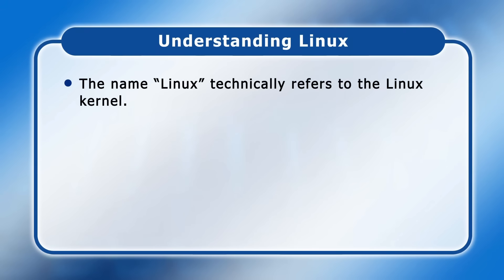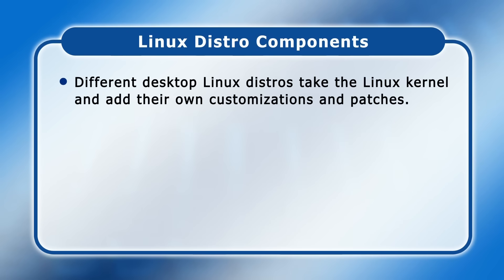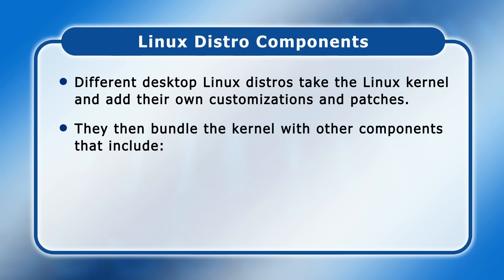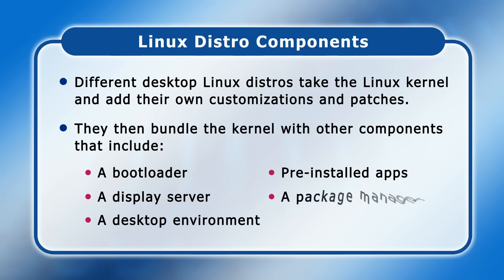The name Linux technically refers to the Linux kernel. Like a seed in the middle of a nut, this is the core component of any Linux distribution, and provides the interface between a computer's hardware and software. Different desktop Linux distributions take the Linux kernel and add their own customizations and patches. They then bundle the kernel with other components, including a bootloader, a display server to draw the screen, a graphical desktop environment, some pre-installed applications, and a package manager for installing more applications. So when you choose a distro, you're selecting how you want the Linux kernel configured and what you want included with it.